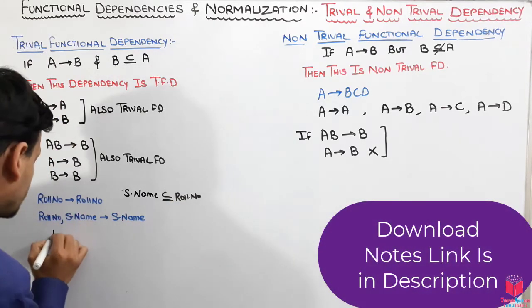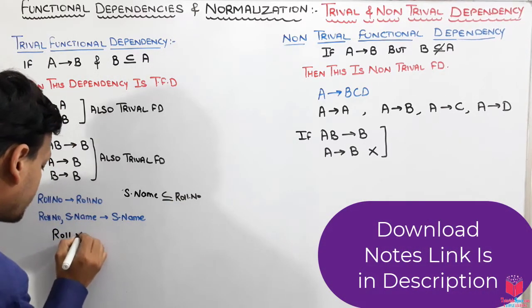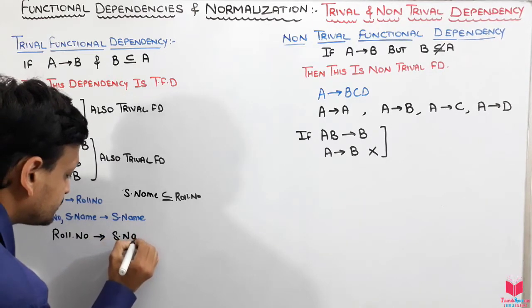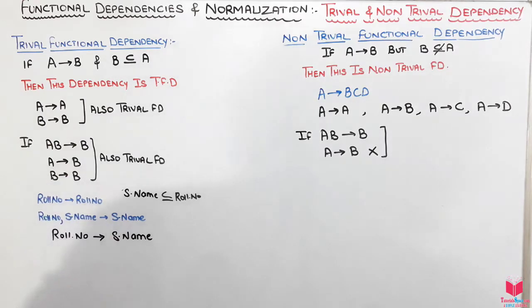So then from that, I can also write that row number, this dependency will also exist here. Then after that, we will have that non-trivial functional dependency.